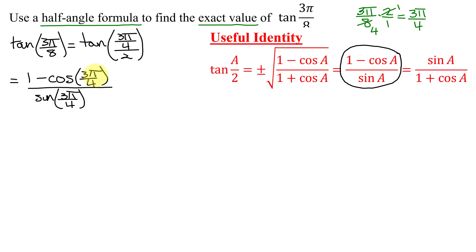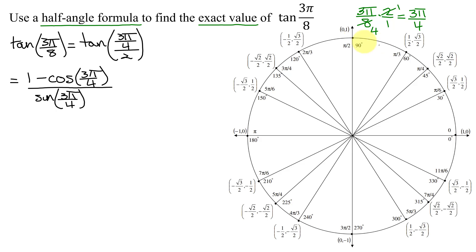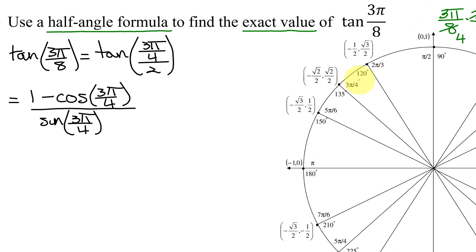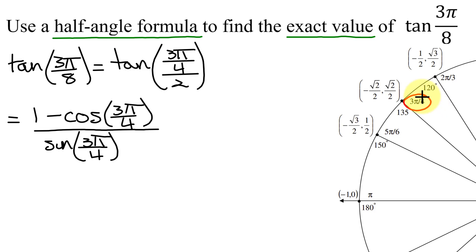Now these are two values that I can find on the unit circle. Here is my unit circle, and here is 3π over 4. Remember the cosine of 3π over 4 is the x-coordinate of this point, and the sine of 3π over 4 is the y-coordinate.